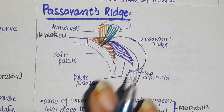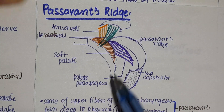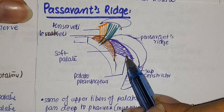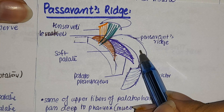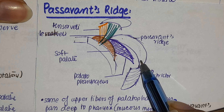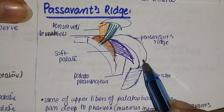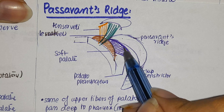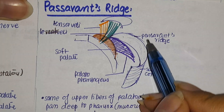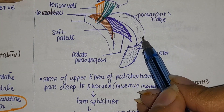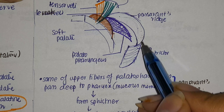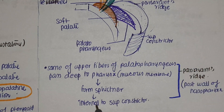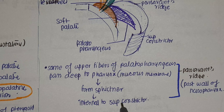Now there are certain fibers on the superior part of the palatopharyngeus which are going to form a ridge or a sphincter. This ridge or sphincter, formed by the superior fibers of the palatopharyngeus muscle, is known as Passavant's ridge, and this Passavant's ridge is present internal to the superior constrictor.